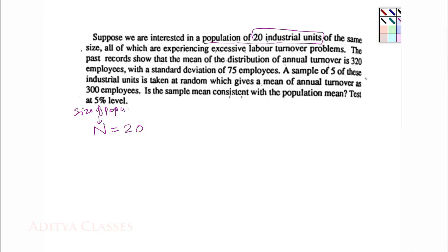All of which are experiencing excessive labor turnover problems. The past record show that mean of the distribution of annual turnover is 320 employees with the standard deviation. Up till now no reference to sample has been made, making it clear that this mean is 320 and standard deviation is 75 of the population.